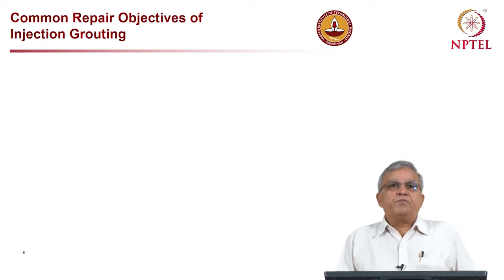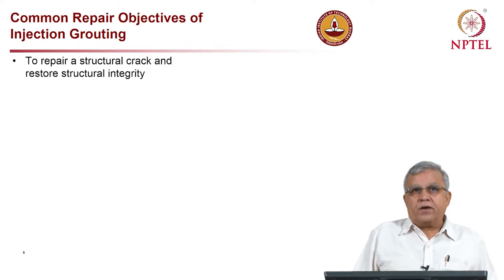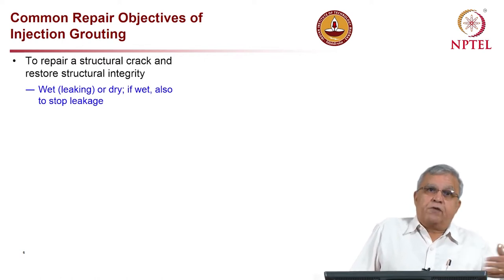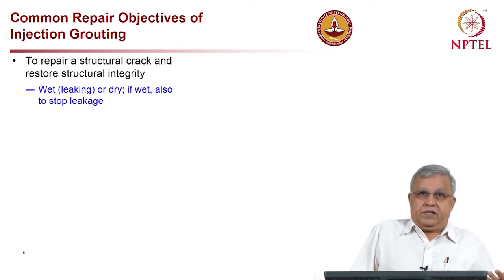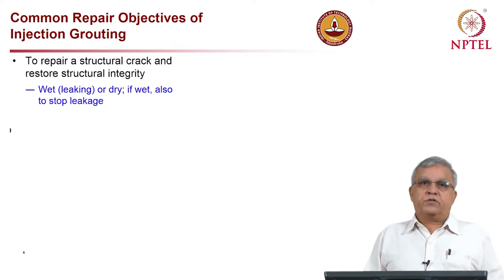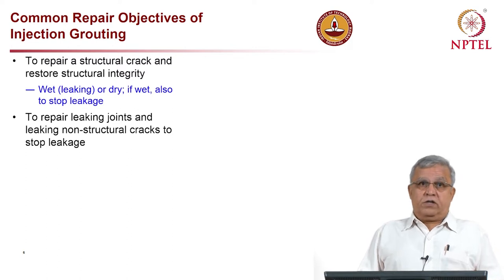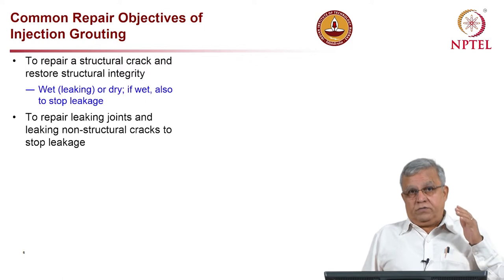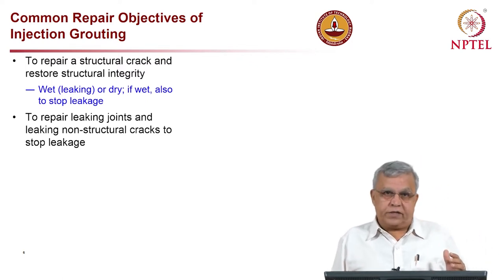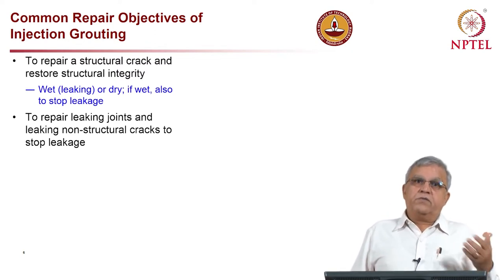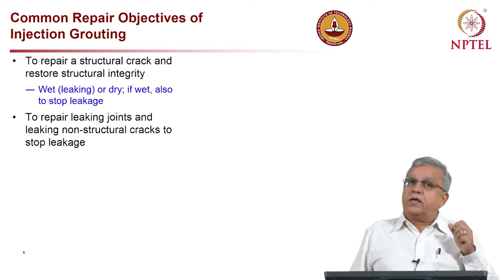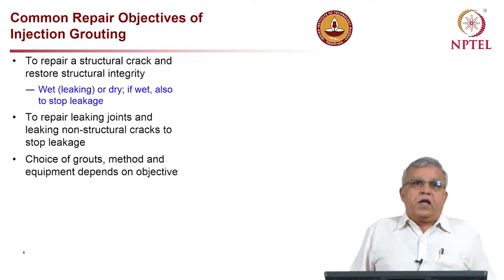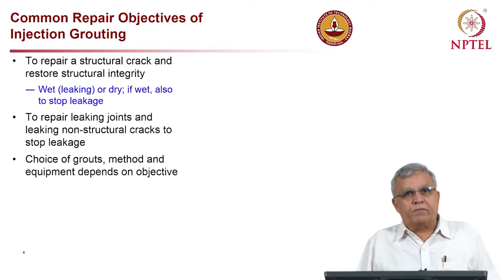Common repair objectives of injection grouting are: first, to repair structural cracks and restore structural integrity - whether the crack is wet (leaking) or dry, we must stop leakage if water is present. Second, to repair leaking joints or non-structural cracks to stop leakage. For structural cracks, the main objective is restoring structural integrity; if leaking, we must also stop the water. For non-structural cracks or leaking construction joints, we only need to stop the leakage.